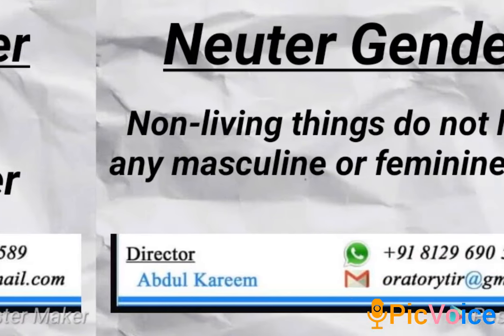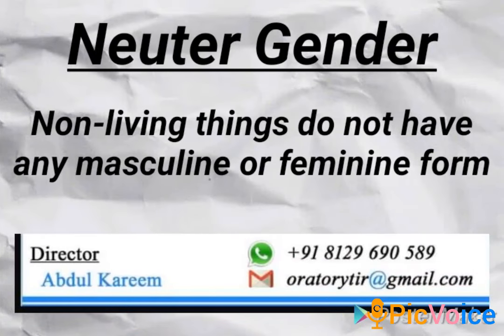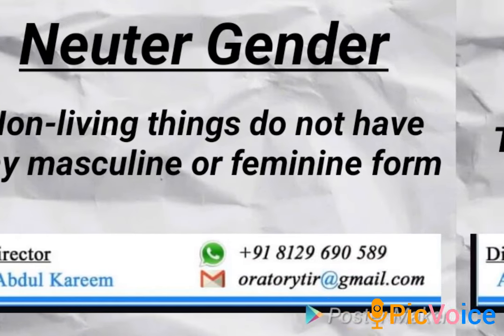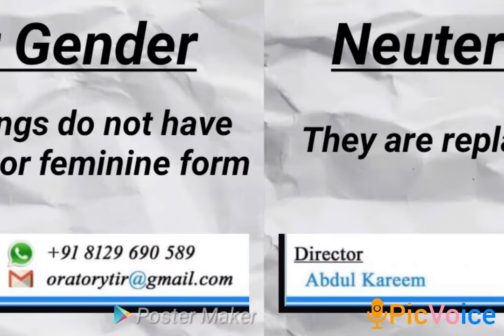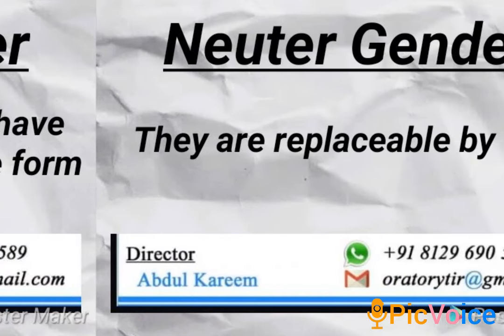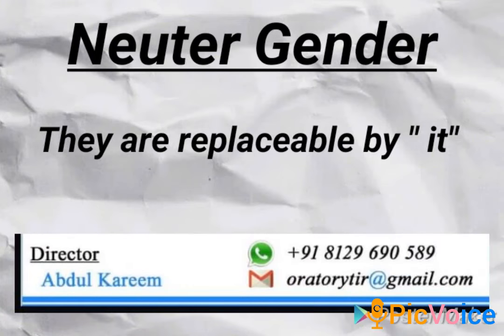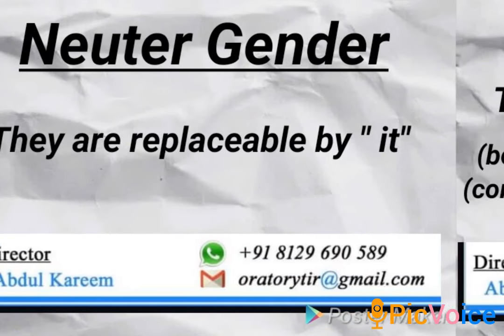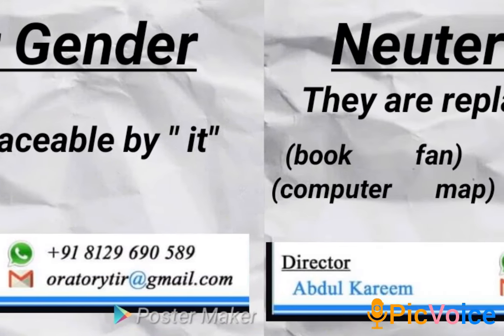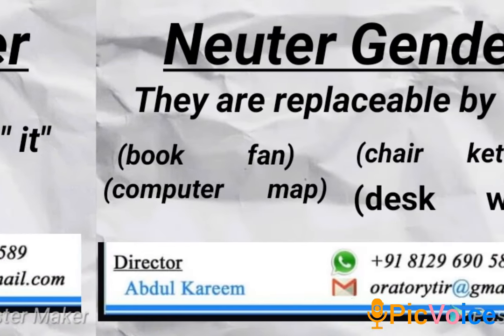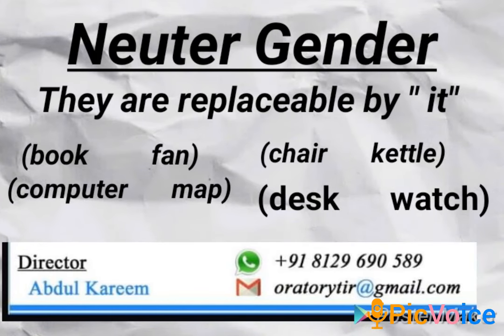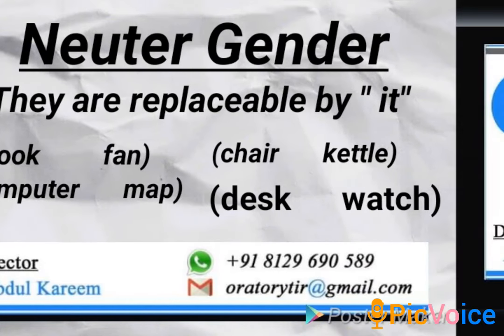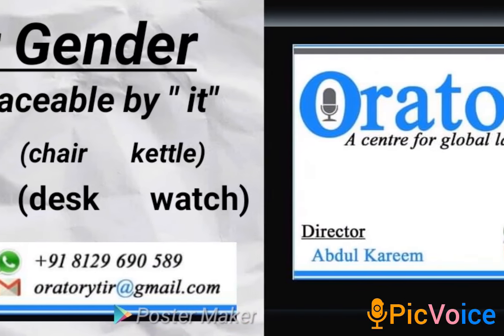Neuter gender. Non-living things do not have any masculine or feminine form. They are replaceable by it. Examples: book, fan, computer, map, chair, kettle, desk, watch.